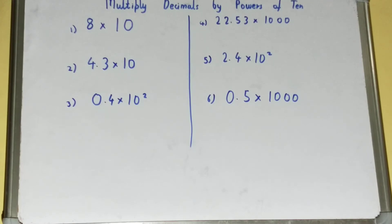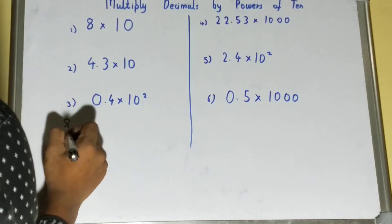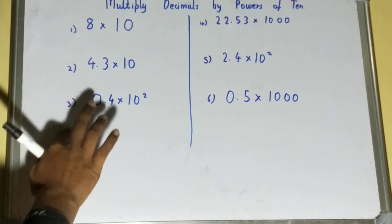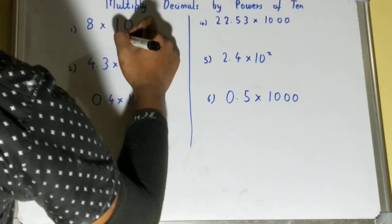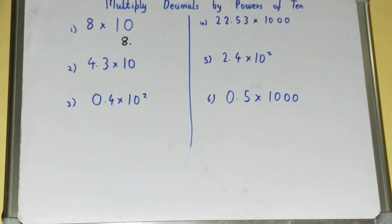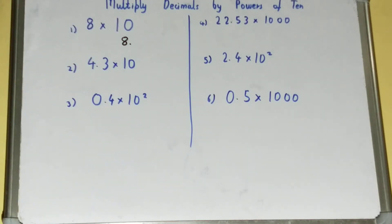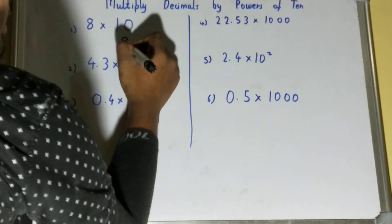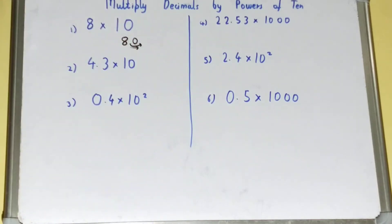Let's start with the first one: 8 × 10. We can multiply it using the normal multiplication process, but we won't be doing that because it is just a power of ten. In the case of powers of ten, we write the number and put the decimal just after the whole number. We see how many zeros we are multiplying with — in this case only one zero — so we move the decimal by one decimal place. Your 8 becomes 80.